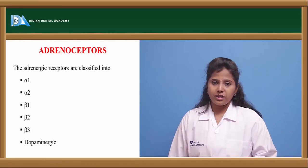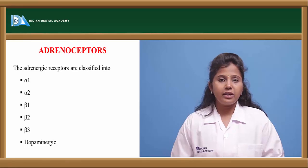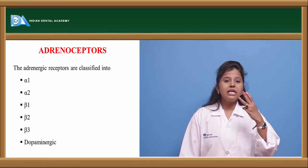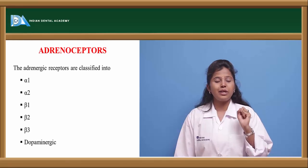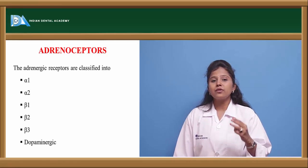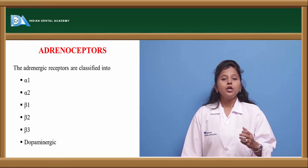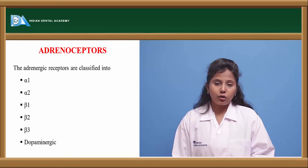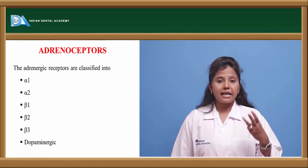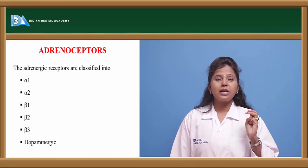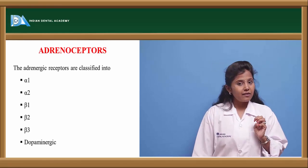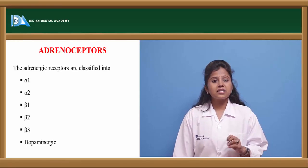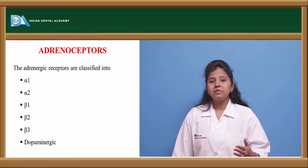There are mainly two types of adrenergic receptors: alpha and beta receptors. As dopamine is one of the neurotransmitters involved in the adrenergic system, dopaminergic receptors are also considered as adrenoreceptors. The adrenoreceptors are categorized as alpha receptors, beta receptors, and dopaminergic receptors. Alpha receptors are further classified as alpha-1 and alpha-2, while beta receptors are classified as beta-1, beta-2, and beta-3.